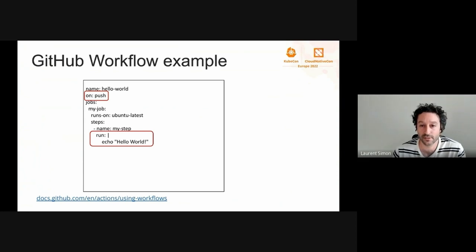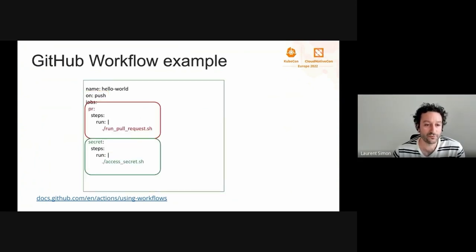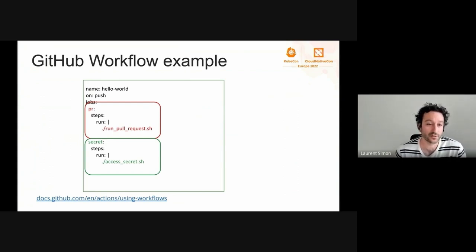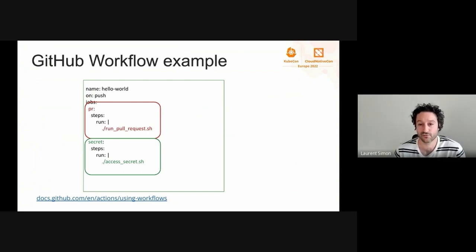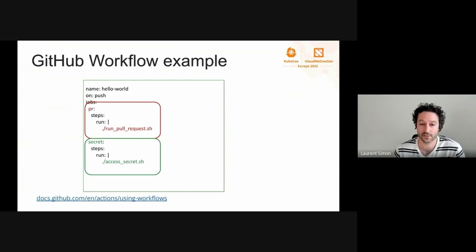Here's a simple example of a Hello World GitHub workflow — all it does is print Hello World every time there's a push to the main branch. One powerful feature of GitHub workflows is their ability to support isolation between jobs. You can define different jobs in the same workflow — here we have two jobs, one in red called PR and one in green called secret. Even though they're defined in the same workflow, those jobs run in isolation. The red job runs on incoming pull requests, which may contain malicious code that might not have been reviewed, so we want it isolated. The green job is a sensitive job that accesses credentials or other sensitive information, such as a secret needed to publish container images to a registry.